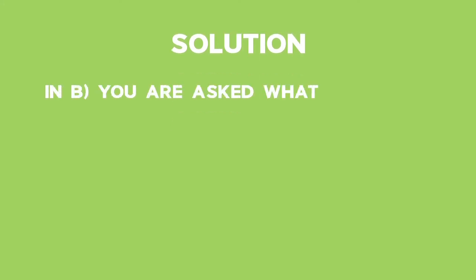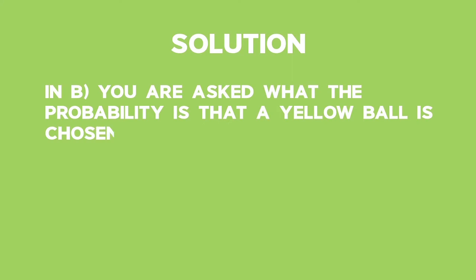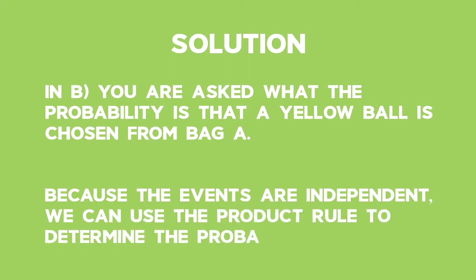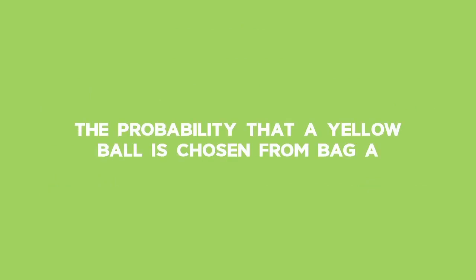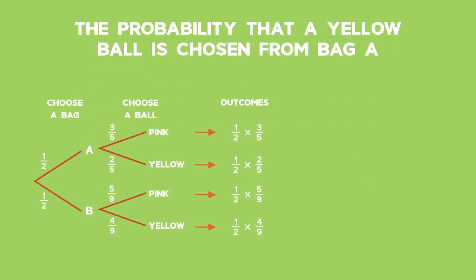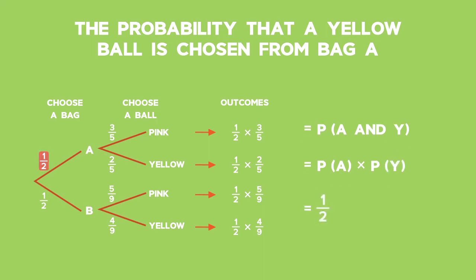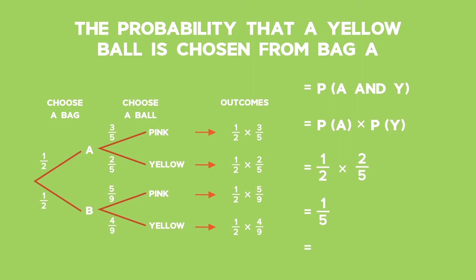For Part B, we are asked what the probability is that a yellow ball is chosen from Bag A. Because the events are independent, we can use the product rule to determine the probability. We write this as the probability of A and Y, which equals the probability of choosing Bag A times the probability of choosing yellow. This is equal to 1 half times 2 over 5, which gives the answer 1 fifth, or 20%.